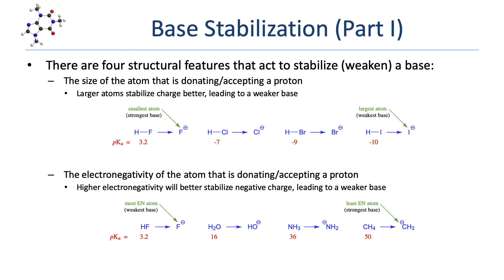Fluoride, being the smallest of these four atoms, is going to be the strongest base because it stabilizes that charge the worst, and chlorine and bromine are in the middle. Since iodide is the weakest, most stable base, its conjugate acid HI would be the strongest of the acids. Looking at the pKa values, the pKa of HI is negative 10, and HF comes in with a pKa of 3.2 — by far the weakest of these acids. The bigger the atom, the more stable the negative charge, making a weaker base and a stronger conjugate acid.